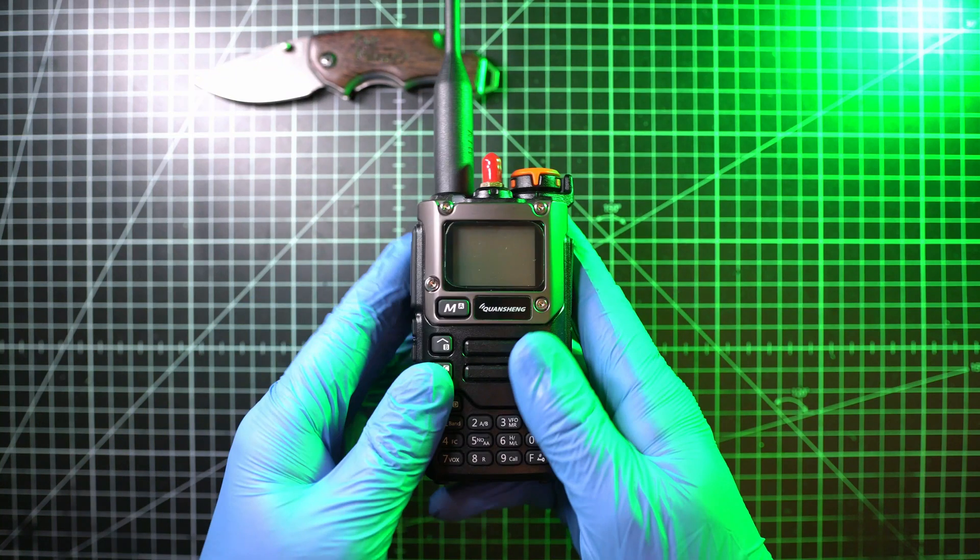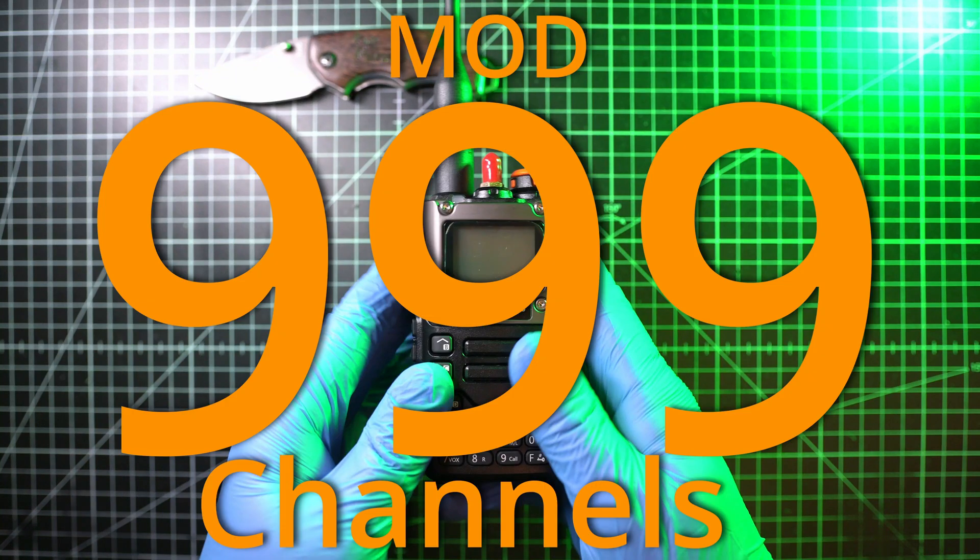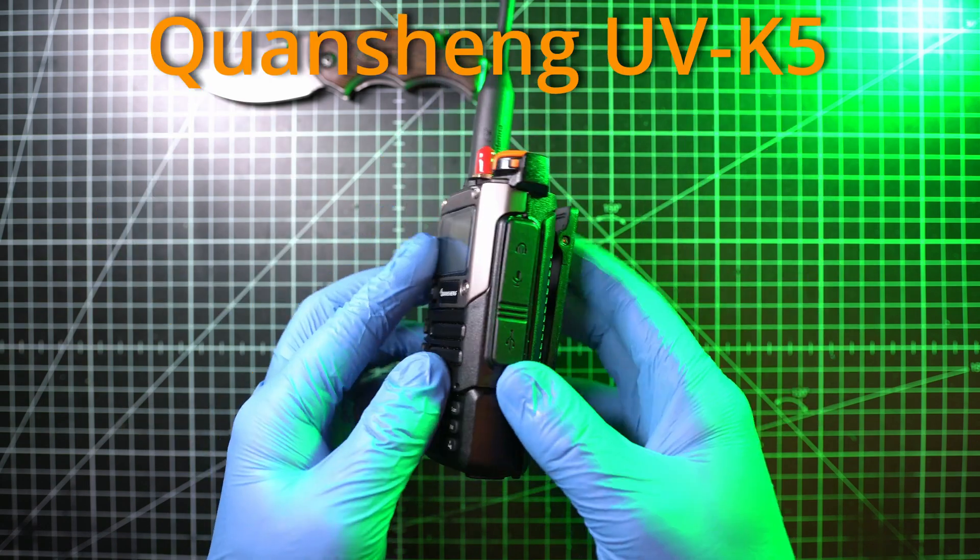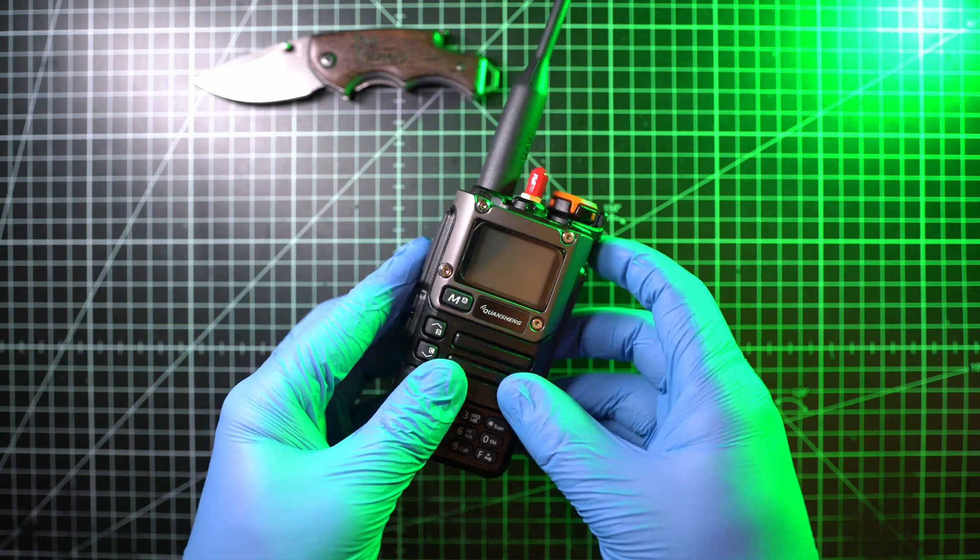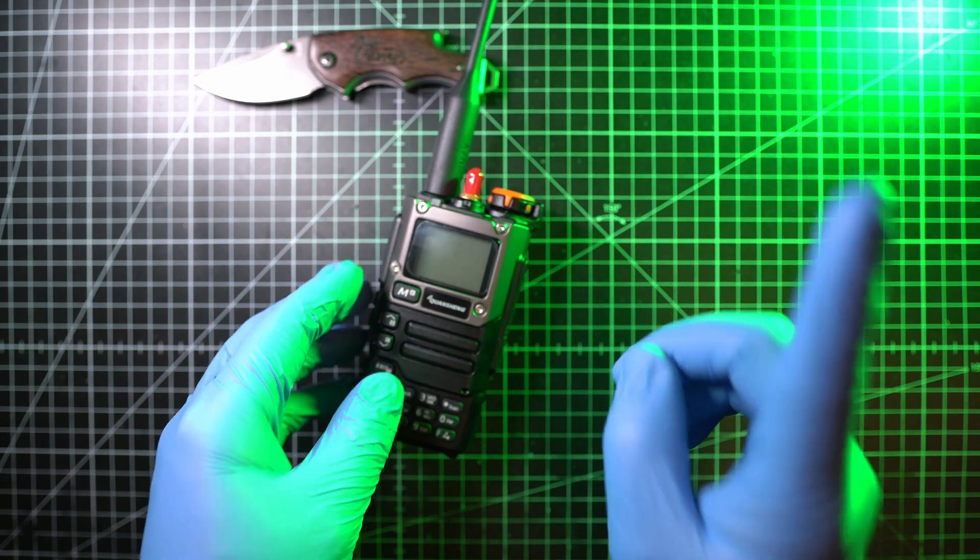Welcome back, today I'll install 999 channels mode to this Quenxing UVK5 radio. This one has HF mode version 5 already installed, video is here.